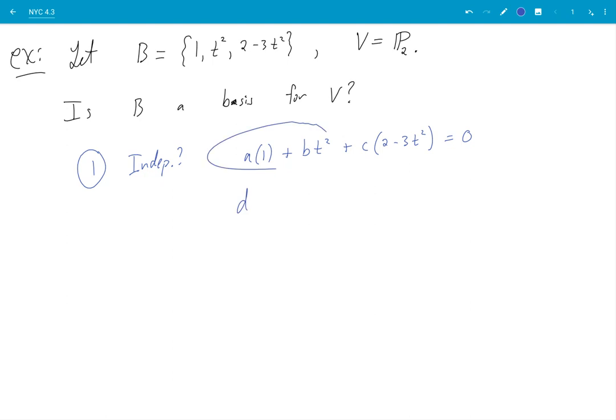So I write down this linear combination equal to zero and I ask does this have a non-trivial solution? I mean for a, b, c. Can I find an a, b, and a c? Not all zero. That make this equation true.